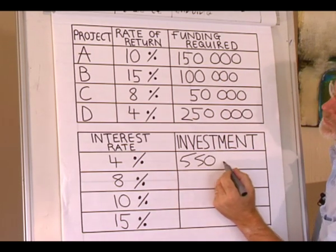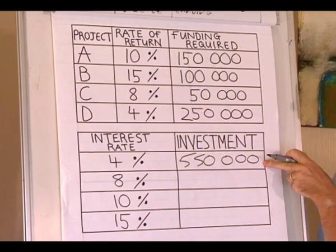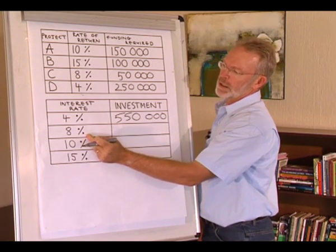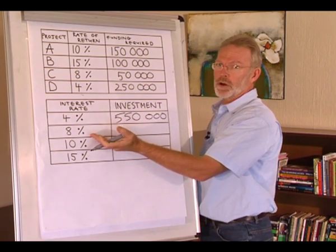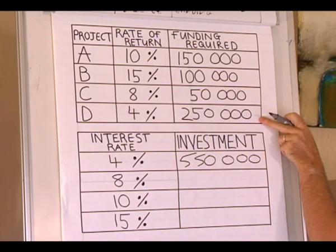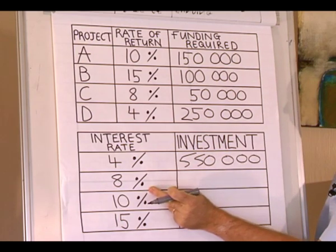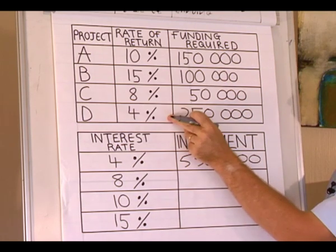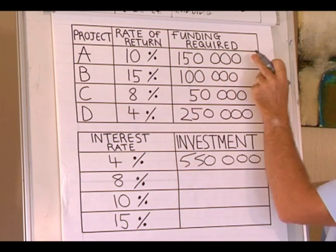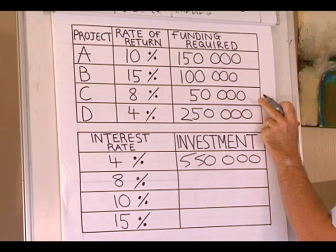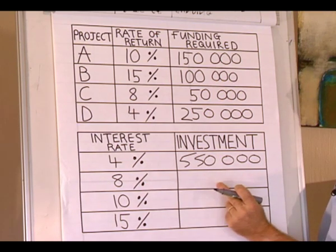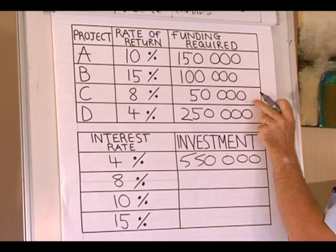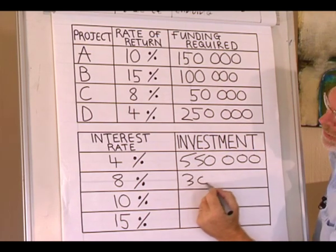At an interest rate of 8% — in other words, now it costs us 8% to borrow the funds — we can see project D is not viable. It costs us 8% to borrow the funds, but the expected rate of return is only 4%, so it costs us more than what we expect in return. But projects A, B, and C are viable. So at an interest rate of 8%, the expected investment will be $150,000 plus $100,000, that's $250,000, plus another $50,000, that is $300,000.